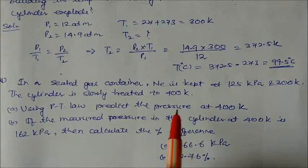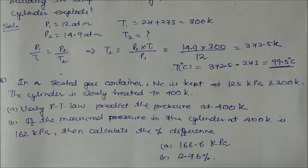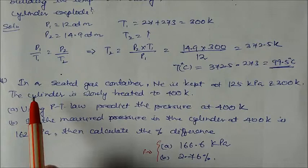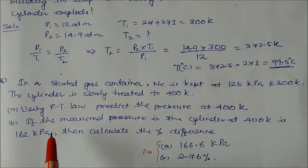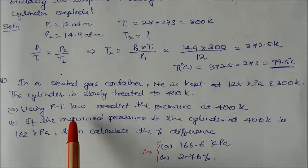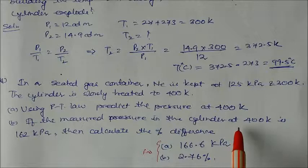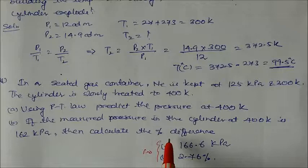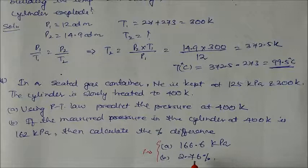There is one unsolved numerical I've left for you. Just try it and get the answer. In a sealed gas container, neon is kept at 125 kPa and 300 K. The cylinder is slowly heated to 400 K. Using pressure-temperature law, predict the pressure at 400 K. If measured pressure is 162 kPa, calculate the percentage difference. The answers are 166.7 kPa and 2.76 percent. Try to solve this question yourself.